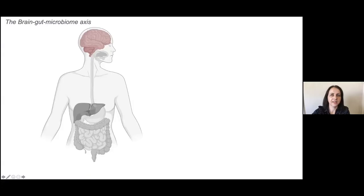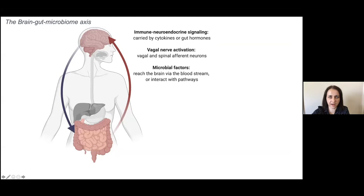The brain-gut microbiome axis relates to the interactions between the brain and the gastrointestinal tract, where alterations in one system can change the other and vice versa. The established communication pathways are the immune-endocrine signaling pathway through cytokines and hormone release into circulation, the neural pathway through the vagus nerve, and the microbial pathway consisting of the release of microbial compounds into blood circulation, which can also interact with the brain.